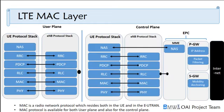This is the LTE MAC layer. As you can see, there are two planes: user plane and control plane. The difference between them is that the user plane is used to transmit voice and data, while the control plane is used for transmitting signaling. For example, if you want to connect to the network, you will use the control plane. This is the basic concept, though the actual implementation is more advanced.